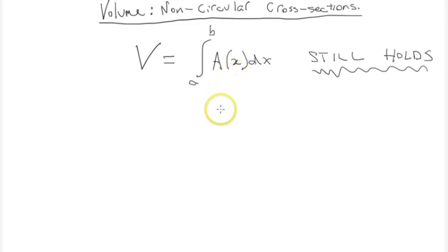For example, we could use this with squares. This could be the equation of a square, or an equilateral triangle, or an isosceles triangle, even like a pentagon if you wanted.